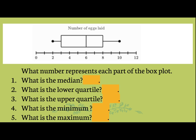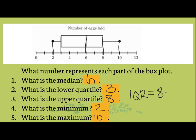Let's look at this number line and box plot — the number of eggs laid. The median, which is the middle number, comes straight down to six. The lower quartile is between two and four, so halfway between is three. The upper quartile is eight. The minimum is two and the maximum is 10. The interquartile range is eight minus three, which is five — that's the range of the middle part of your data. The range of all the data would be eight, but the interquartile range is five.